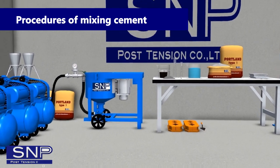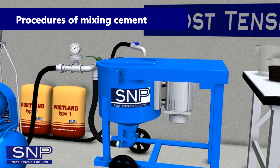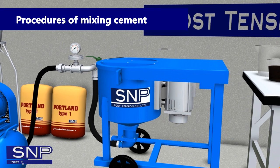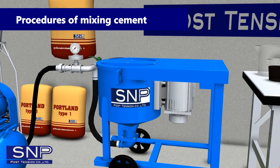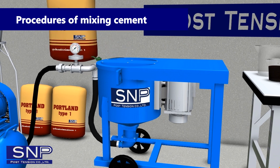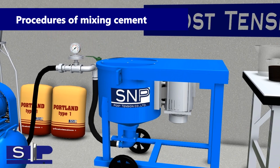Procedures of Mixing Cement: 1. Measure water for 40 liters and pour it in the mixing tank. 2. Fill Water Reducing and Retarding Admixture for 200mm in the tank. 3. Weigh 7g Aluminum Powder and put it in the tank. 4. Put 100kg of cement in the tank. 5. Mix it.